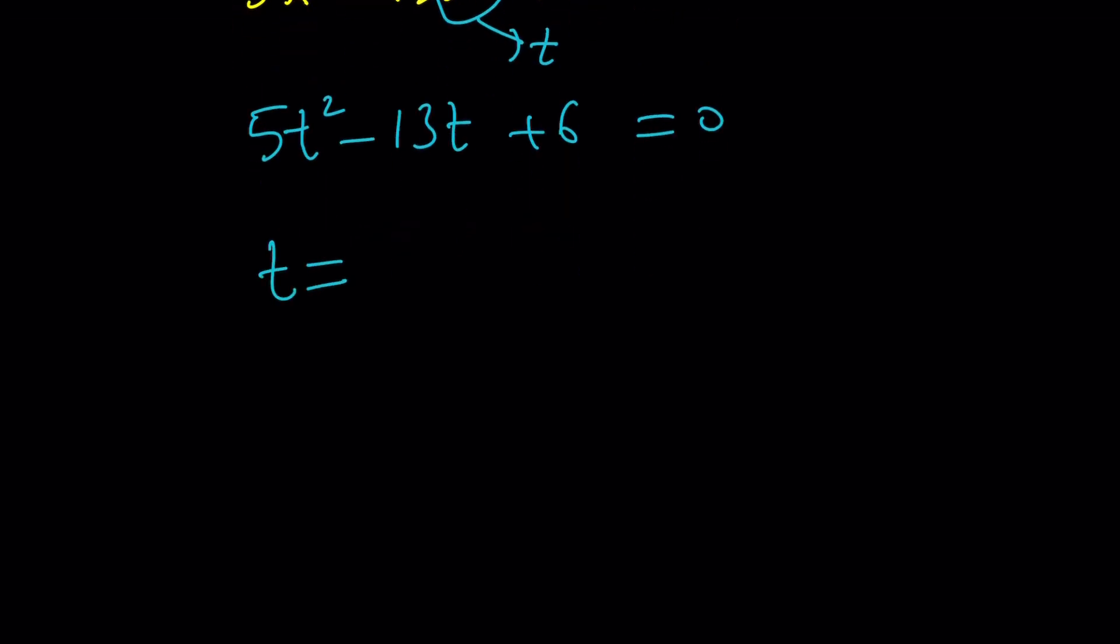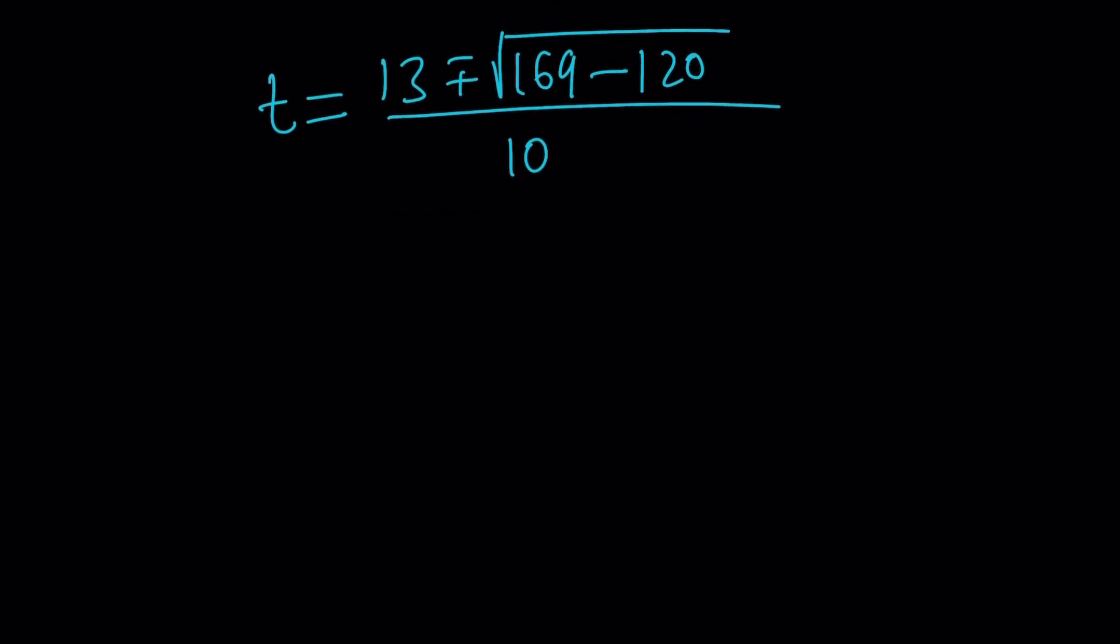So t equals negative b plus minus the square root of b squared minus 4ac. That's going to be 120. Yay. The difference is a perfect square, which means we're going to have nice rational solutions. Beautiful. 169 minus 120 is 49. The square root of 49 is 7. So from here, we get 13 plus minus 7 over 10. So t can be 20 over 10, which is 2. Or t can be 6 over 10, which is 3 over 5.